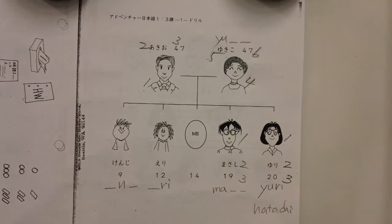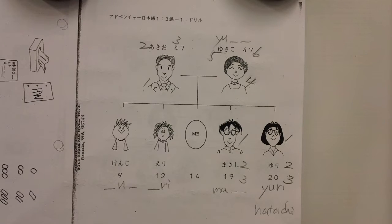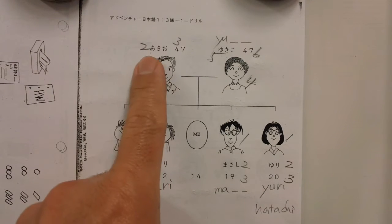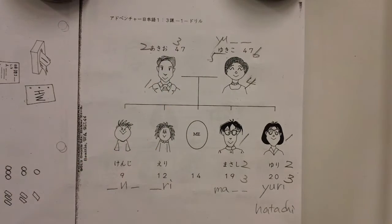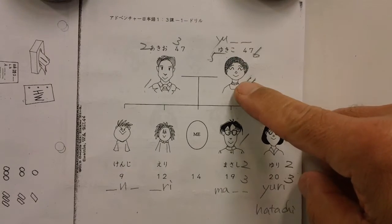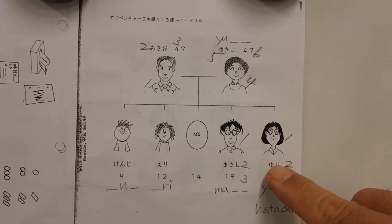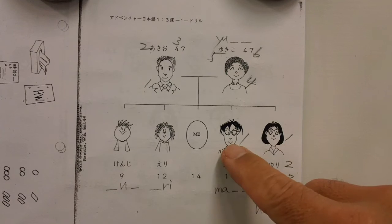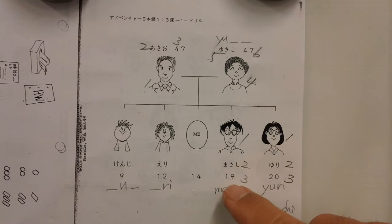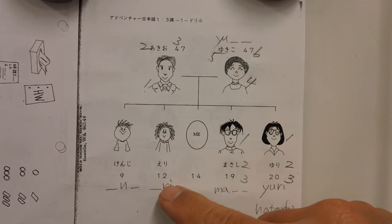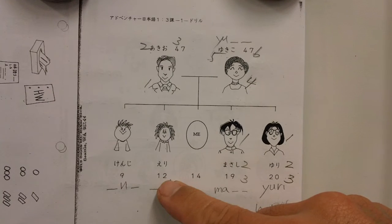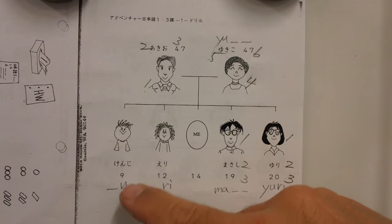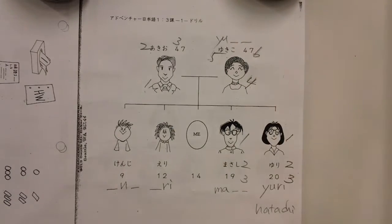This is my family picture. There are seven people in my family. You can introduce each person: これは父です。父の名前はあきよです。父は47歳です。これは母です。母の名前はゆきこです。母は47歳です。これは姉です。姉の名前はゆりです。姉は二十歳です。これは兄です。兄の名前はまさしです。兄は19歳です。妹の名前はえりです。妹は十二歳です。弟の名前はけんじです。弟は9歳です。That's the basic information that you should know.